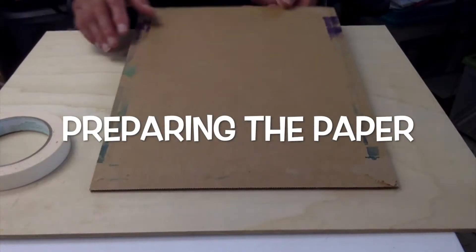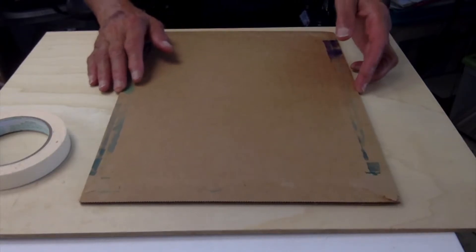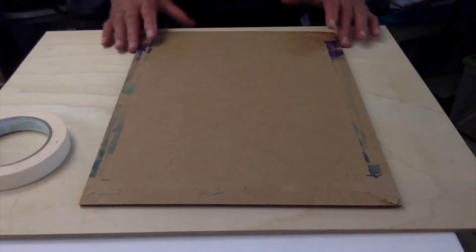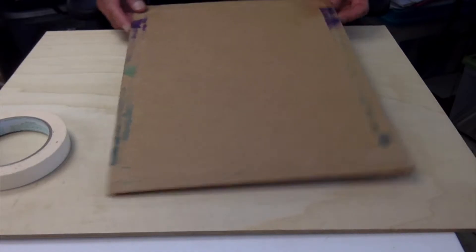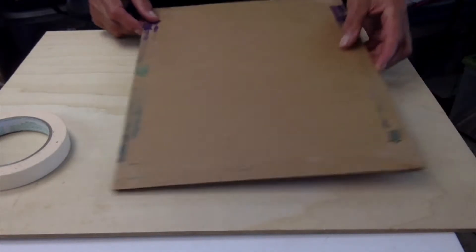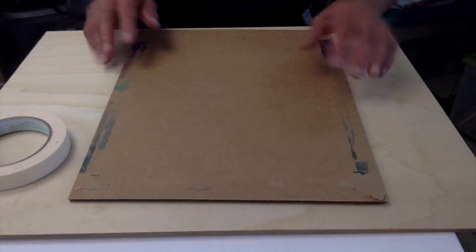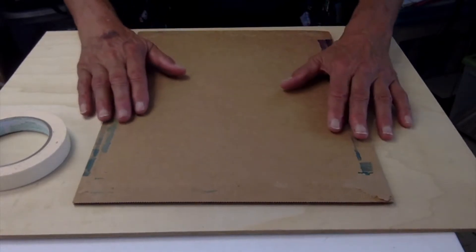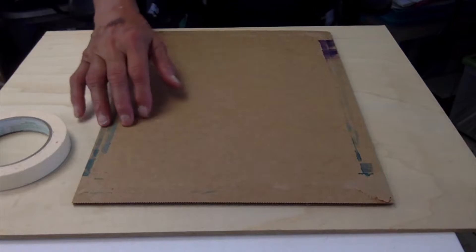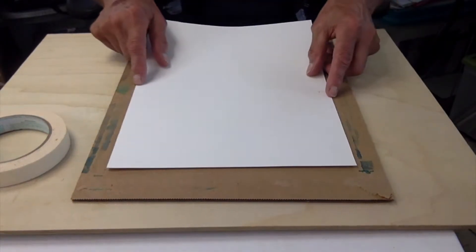All right, the first thing we want to do is to get our paper ready. This is a piece of cardboard about 12 by 16 and it's a little thicker piece of cardboard. I'm going to take that and I'm going to tape my 9 by 12 paper down.